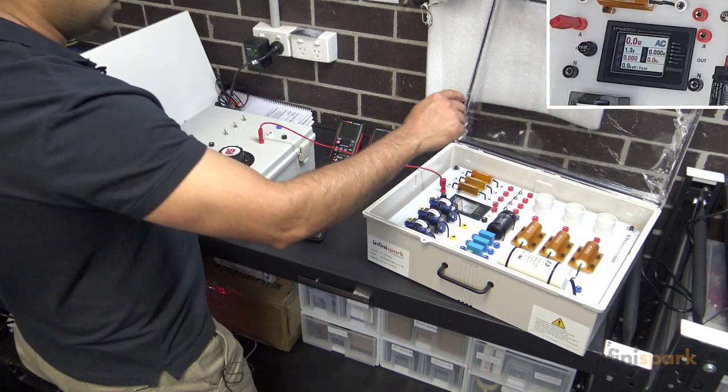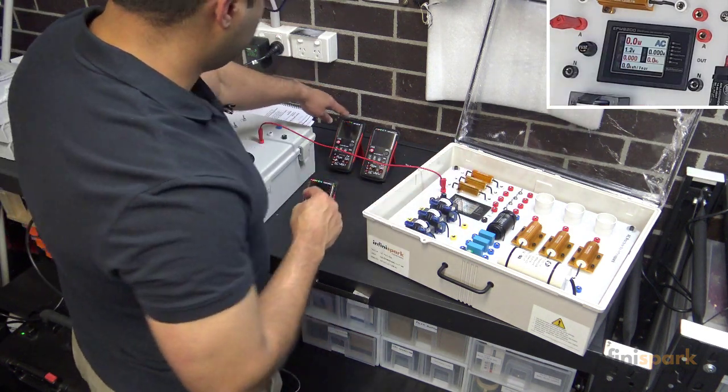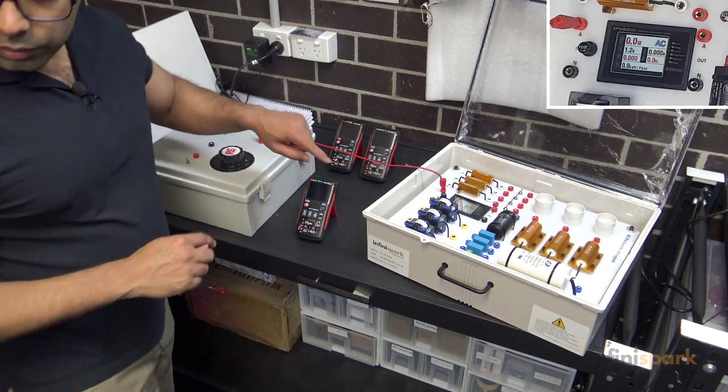We'll measure the line one current from this meter here, and then line two and line three, and this one will be a neutral current.